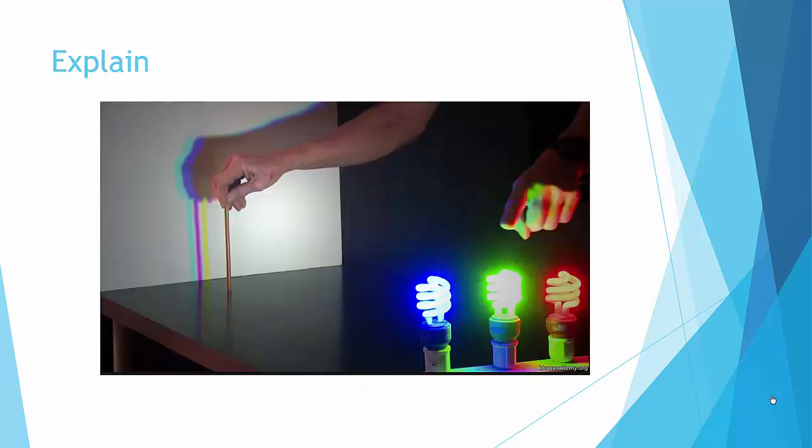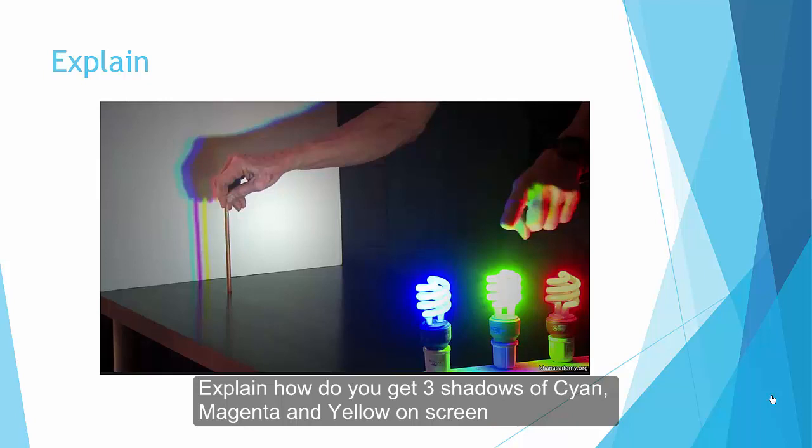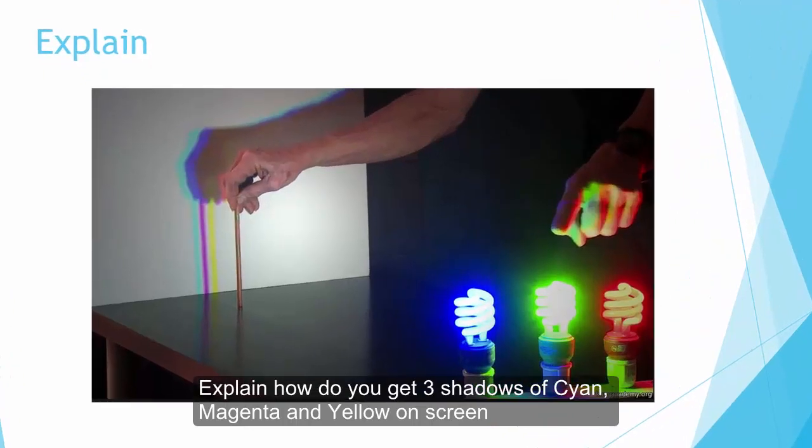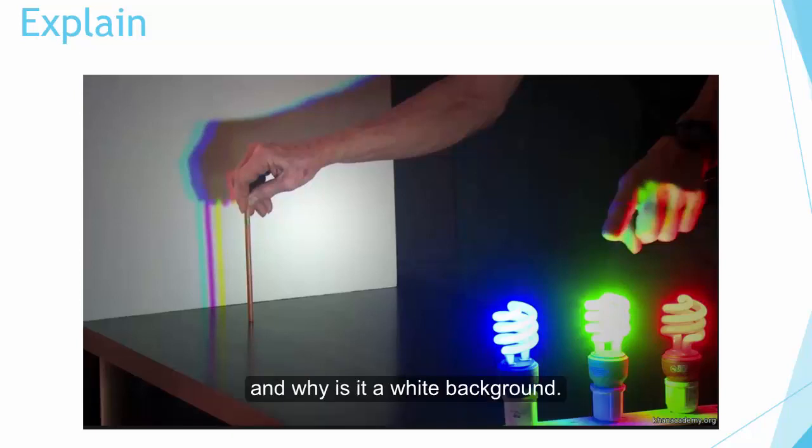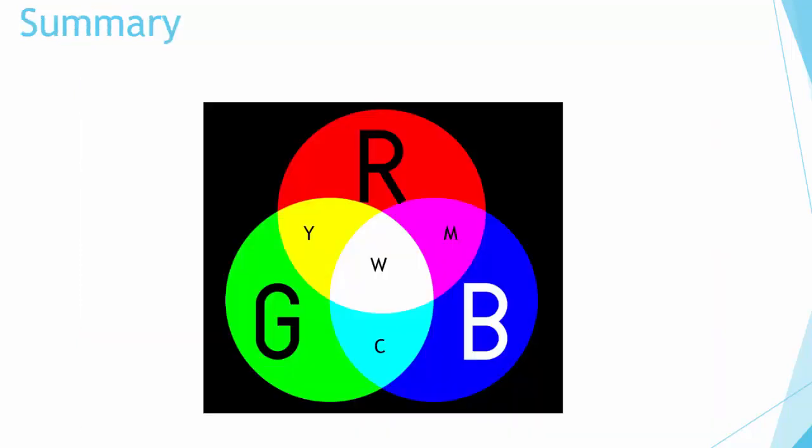Coming back to this picture, can you right now explain how do we get these three shadows of cyan, magenta, and yellow over at the board over there? And why is it a white background? So think about it.